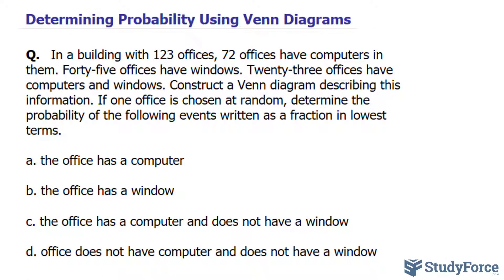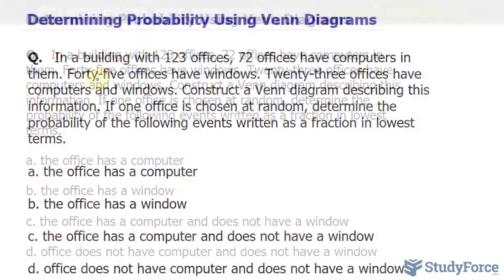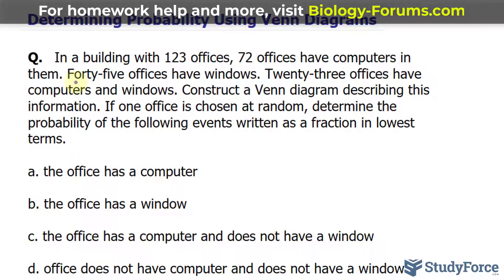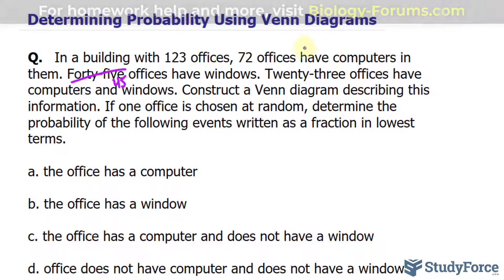Where do we see this intersection in our problem? We see it with the rooms that have both computers and windows. First, let me change this 45 into the number 45, just so we can sort through these numbers easier. We have 72 offices that have computers in them out of the 123 offices, 45 offices have windows, and 23 offices have computers and windows.